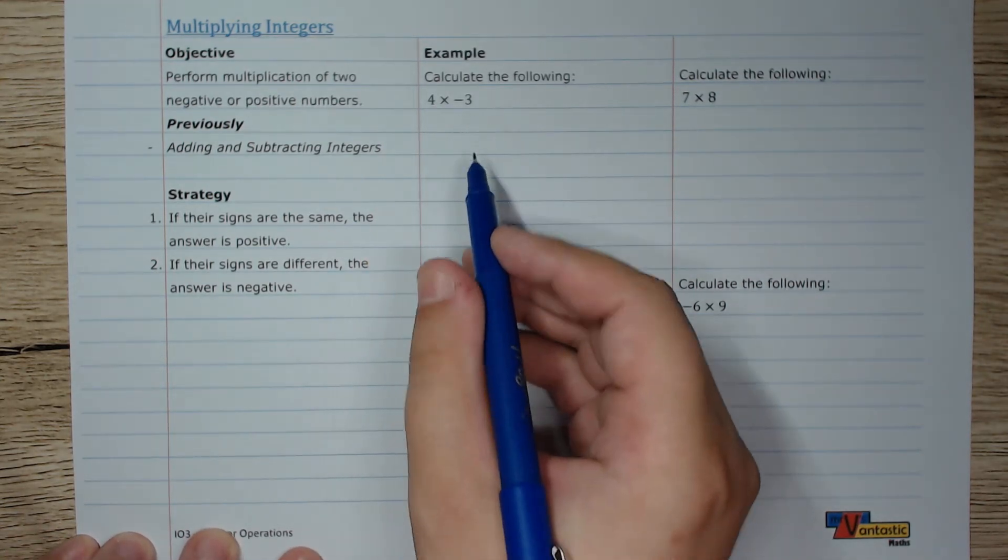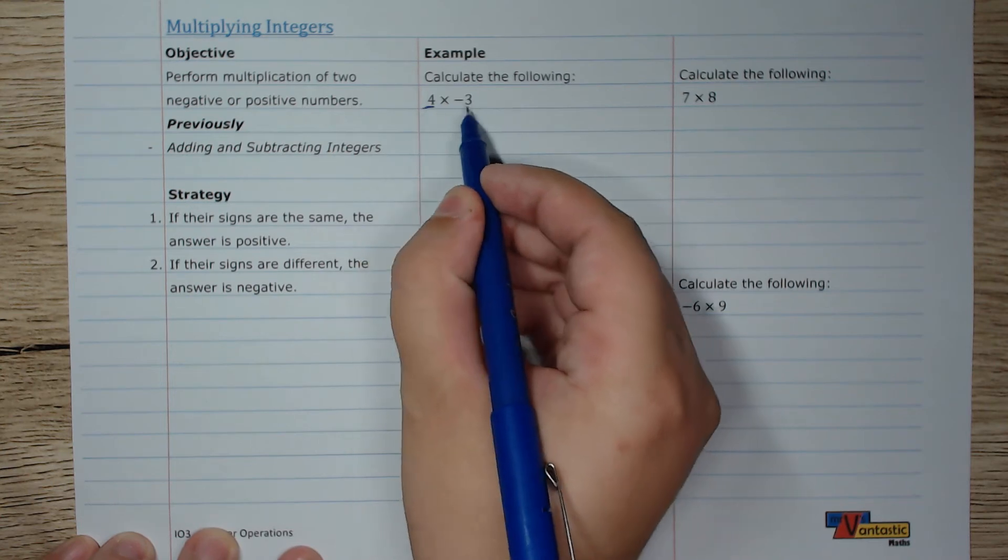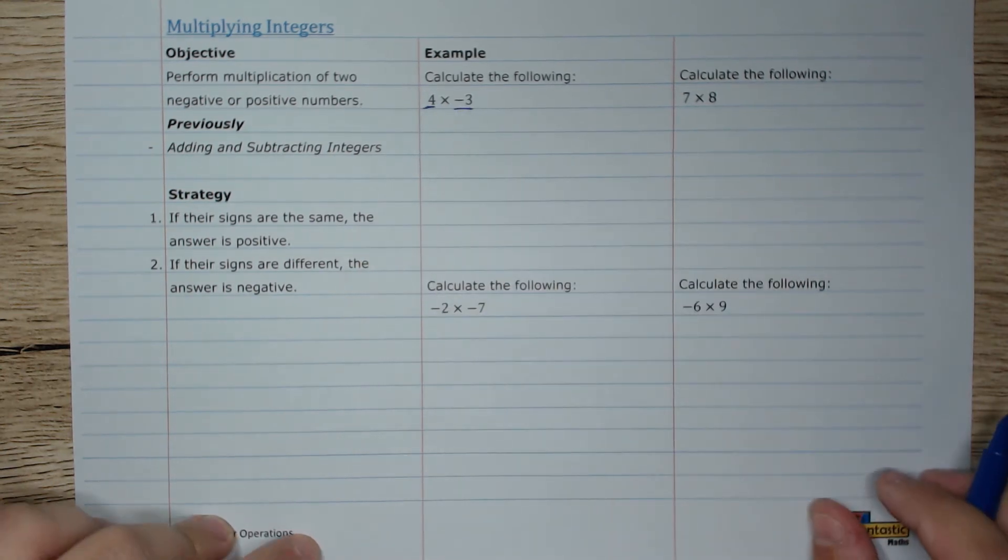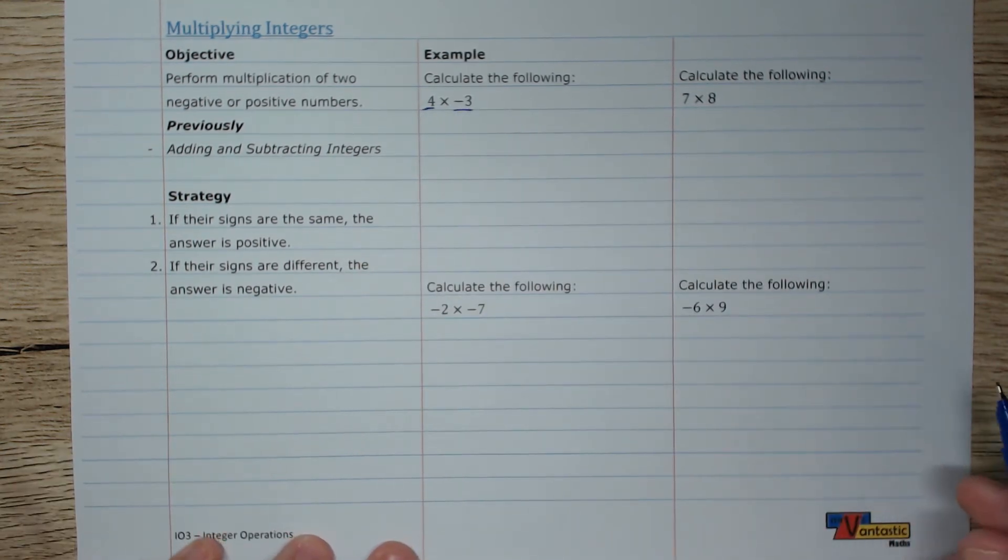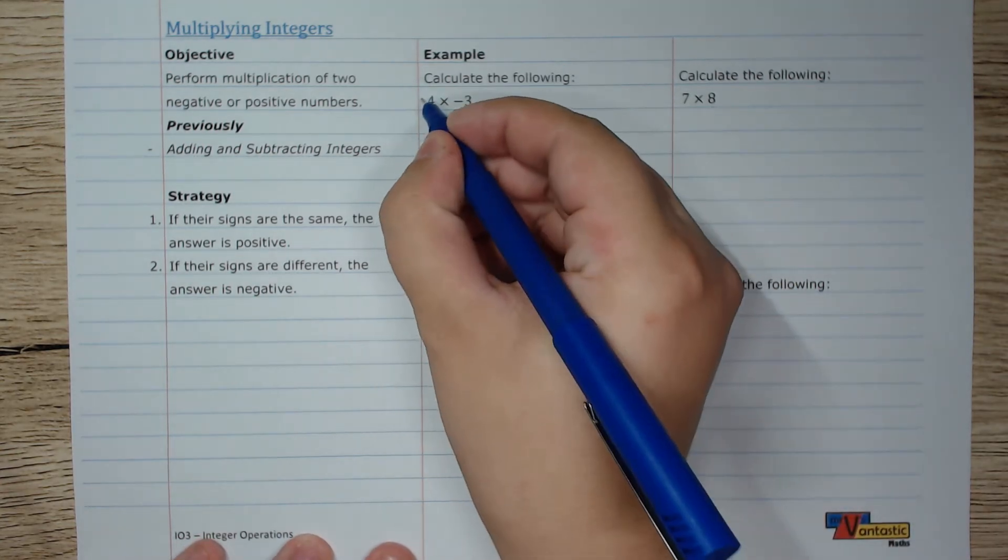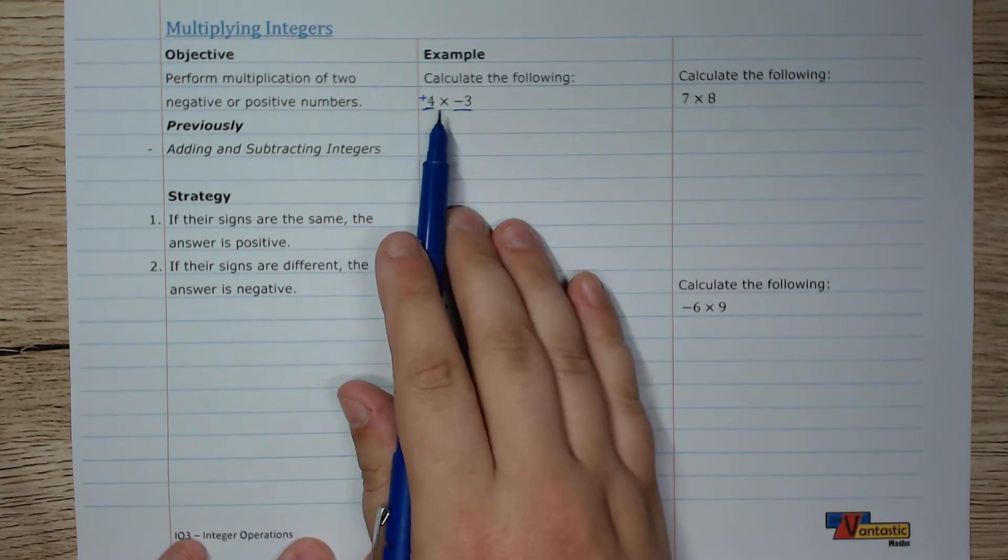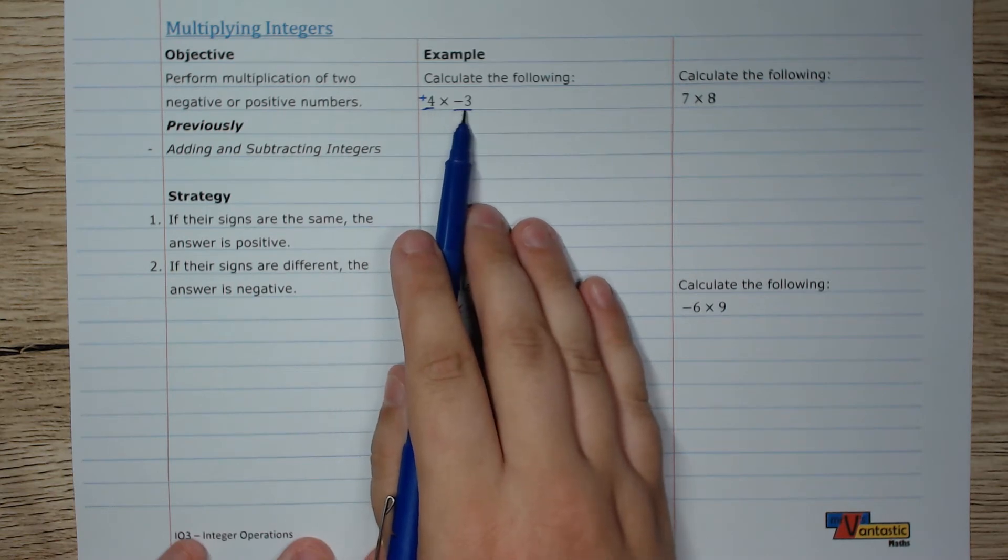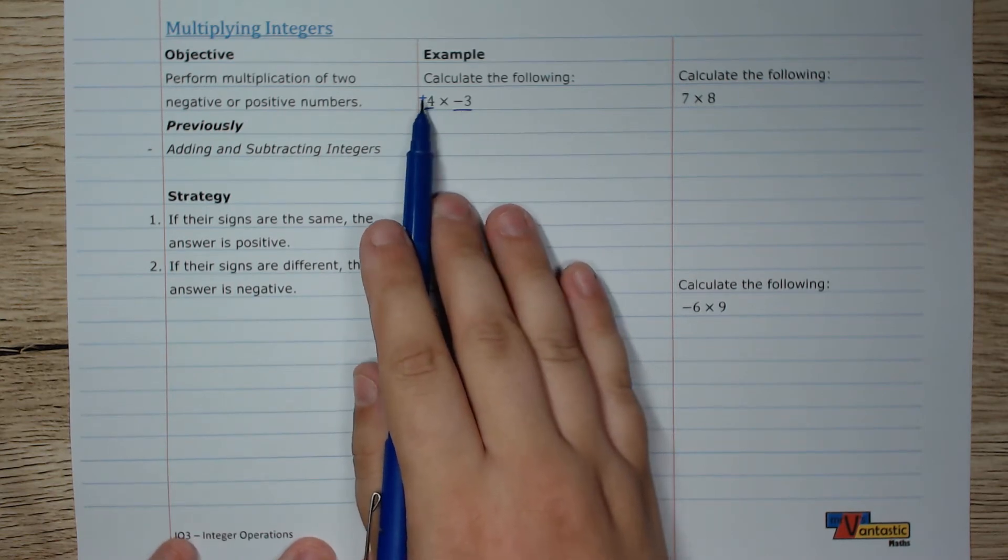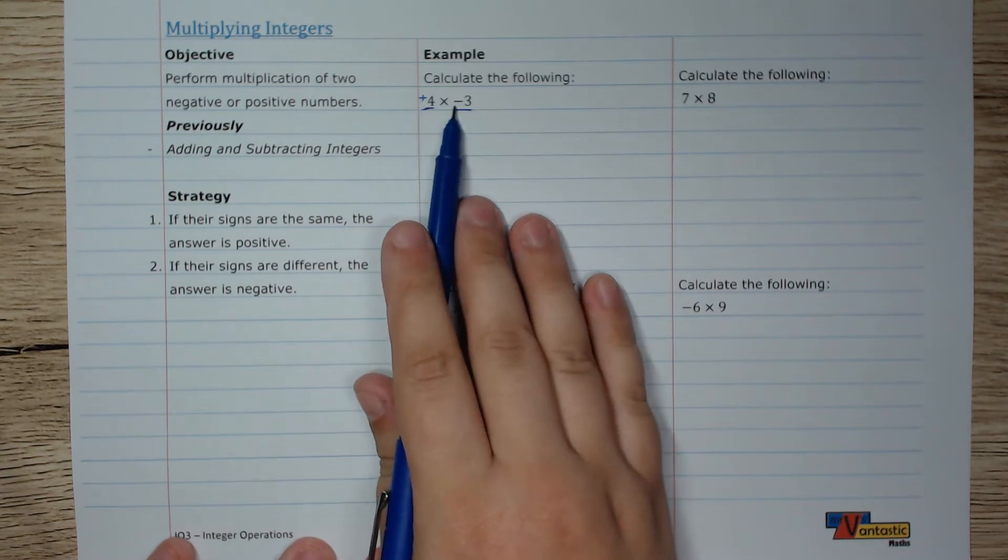So in this first one, I've got 4 and I've got negative 3. Now remember that if there's no sign in front, we assume that they're positive. So we've got positive 4 and negative 3. So positive and negative, those two signs are opposite.